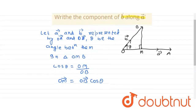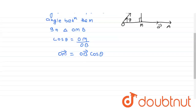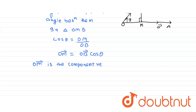Now, OM vector is the component vector of B vector along A vector.